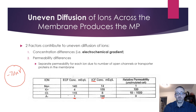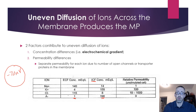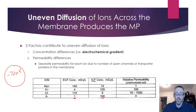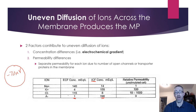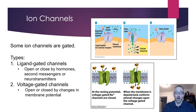What dictates one ion's permeability over another depends on the number of channels available and how long those channels stay open versus closed. Potassium being 100 times more permeable than sodium may mean it has many more channels, or that those channels stay open longer. The more channels there are and the longer they stay open, the more permeable that ion is and the more readily it moves down its concentration gradient.